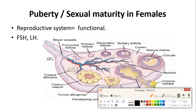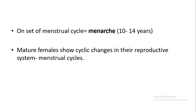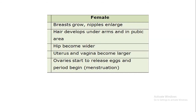As ovulation occurs, the Graafian follicle is converted into corpus luteum, and this corpus luteum produces the pregnancy hormone called progesterone. The menstrual cycle starts, which is called menarche, and that begins at about 10 to 14 years old. Secondary sexual characters also develop in females, like widening of the hip region, enlargement of mammary glands, and deposition of fat in certain regions.